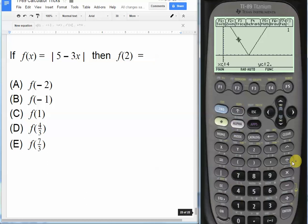And now we want f of 4 thirds. So let's put in 4 over 3. And there it is, 4 thirds. The y value is also 1. And just for good measure, let's also put in the last choice, choice E, 7 thirds, which is y equals 2, which is not what we want.